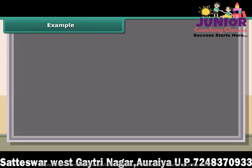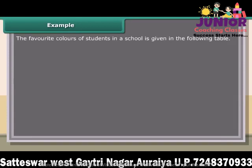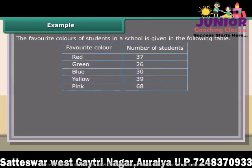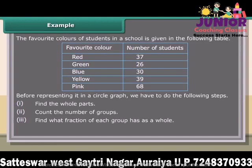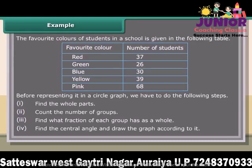Example 1: The favorite colors of students in a school is given in the following table. Before representing it in a circle graph, we have to do the following steps: find the whole parts; count the number of groups; find what fraction each group has as a whole; find the central angle and draw the graph according to it.